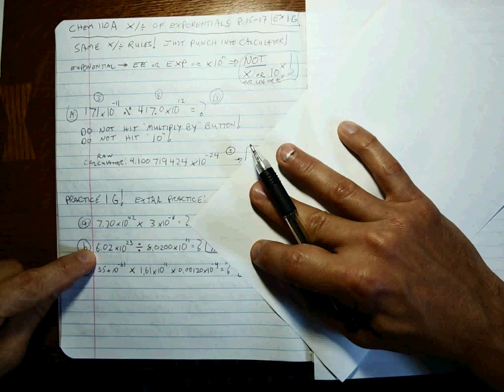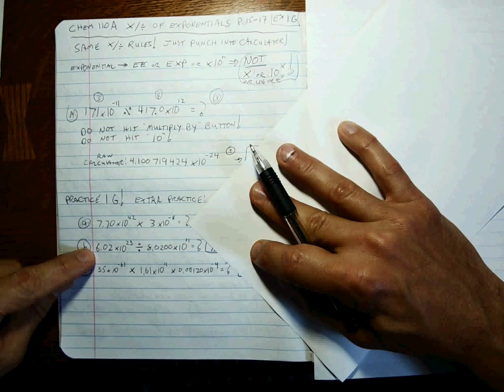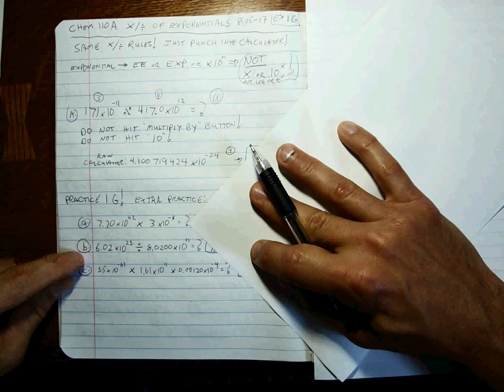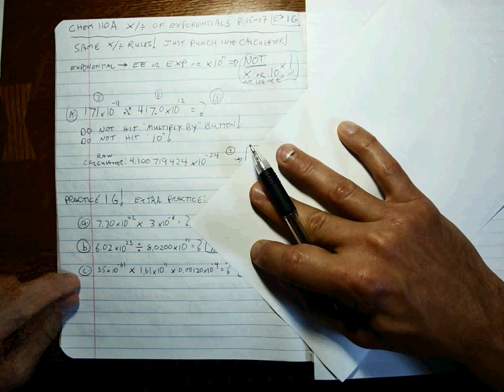B: 6.02 times 10 to the 23rd divided by 8.0200 times 10 to the 11th.